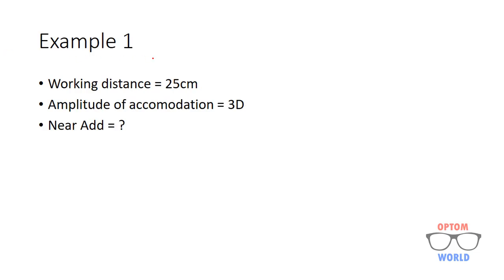Example number 1: We have a patient whose working distance is 25 cm and his amplitude of accommodation is 3 diopters, and we have to predict or estimate near-add. First of all, I will convert this working distance into diopters.